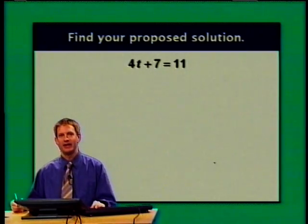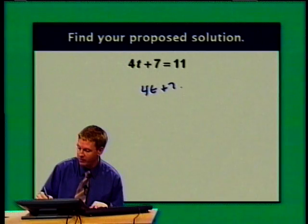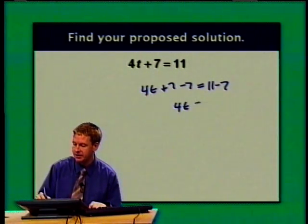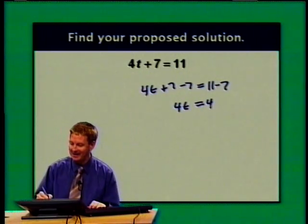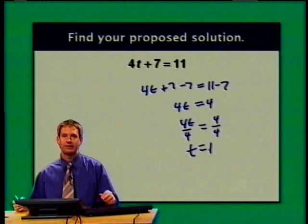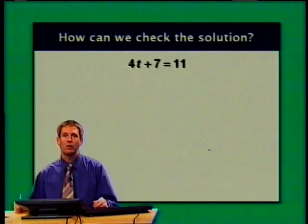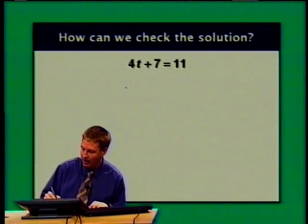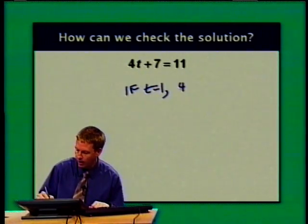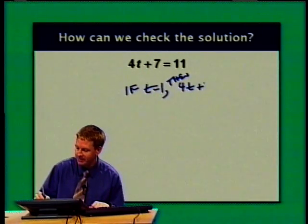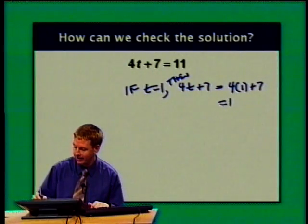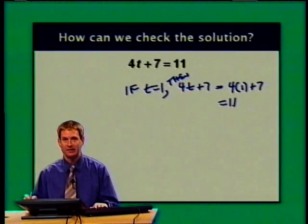Let's look at 4t plus 7 equals 11. I subtract 7 from both sides to get 4t equals 4, then divide both sides by 4 to get t equals 1. The solution is 1. To check: replace t with 1, giving 4 times 1 plus 7 equals 4 plus 7 equals 11. The equation is true when t equals 1, so our answer checks.